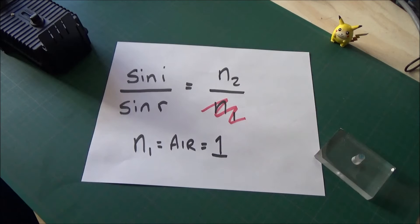So, what we can say is the sine of the angle of incidence divided by the sine of the angle of refraction will equal the refractive index of the perspex.